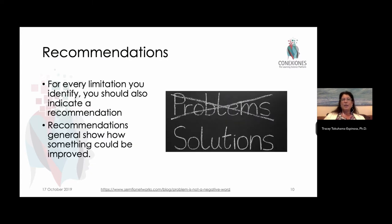Finally, you close up by responding — taking each one of those limitations and turning it into a recommendation. So if you realize that the scope of your study only looked at kids in second grade, and you realize that's a limitation because you can't generalize it to all primary school kids, then you could mention in your recommendations that in the future you really hope that further research can be done to extend to all primary school grades.